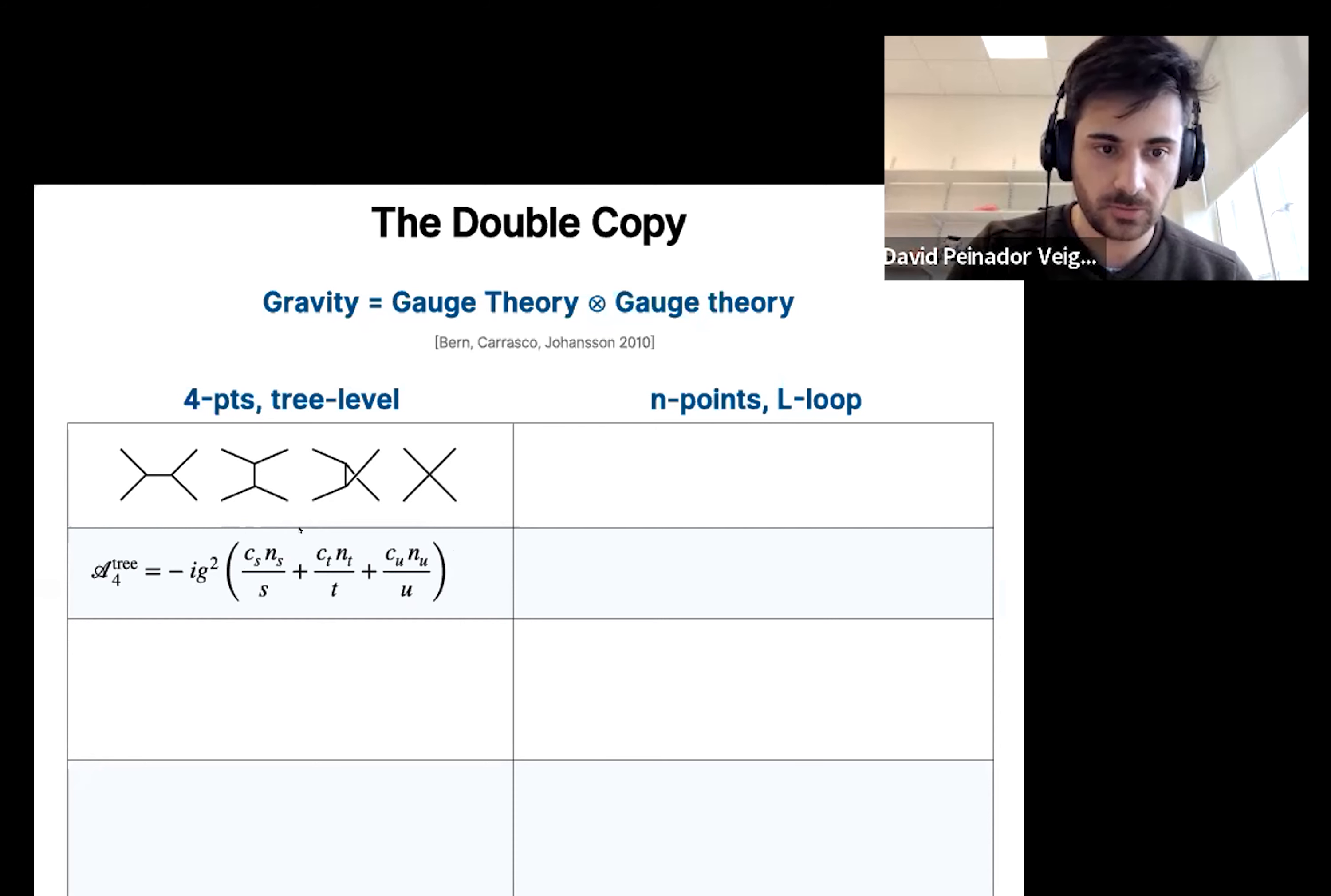This one contributes to all three terms. And the C's are color factors, which include structure constants and the generators of the gauge group, for example, whereas N corresponds to the kinematic factors, which are objects that are made out of polarization vectors and the momentum.